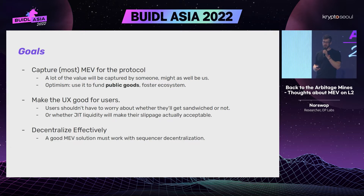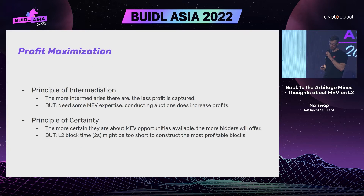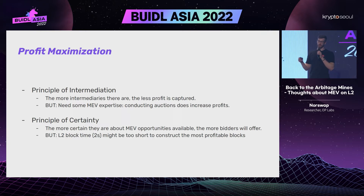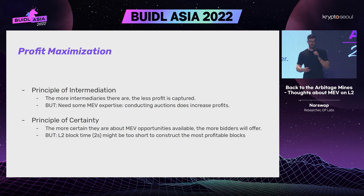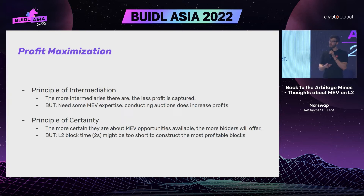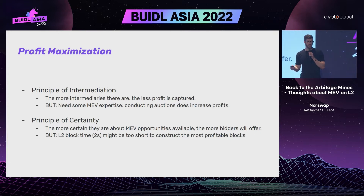To maximize profit, there are two principles. The principle of intermediation: the more intermediaries you have, the less profit you can capture for the protocol. The principle of certainty: the more uncertain you are about which opportunities are available, the less profit you can make. If you're bidding for inclusion in the next block you know all the opportunities, but bidding for inclusion in 10 blocks means uncertainty, so you'll bid much less.